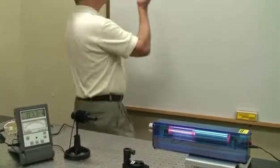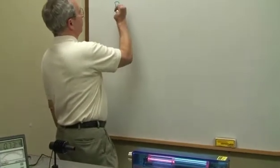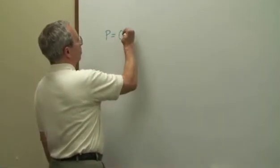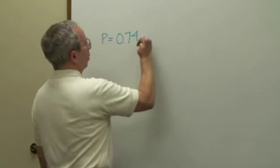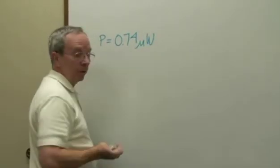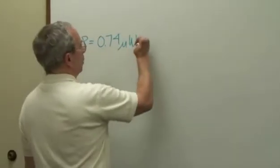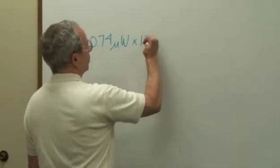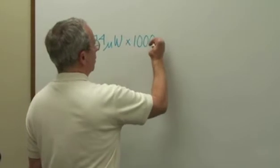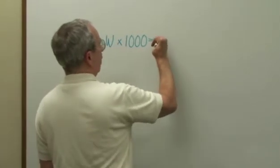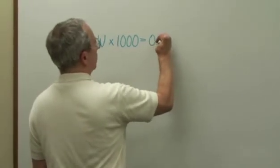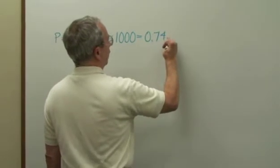On our data table, we'll record a power level of 0.74 microwatts. But remember that we're using a 1,000 to 1 attenuator here. So we're going to multiply this power by 1,000. And our actual power will then be 0.74 milliwatts.